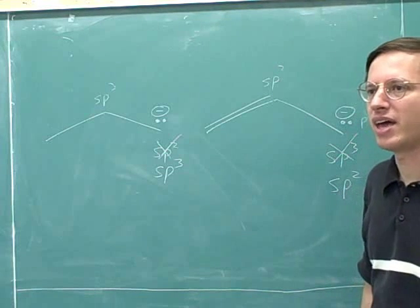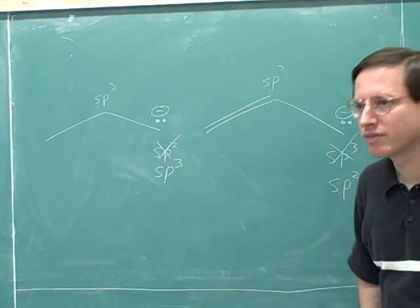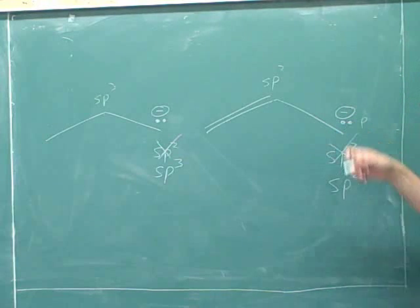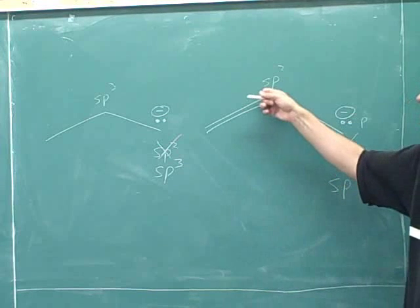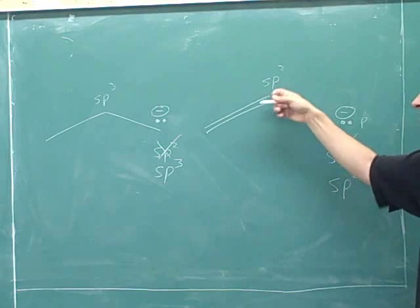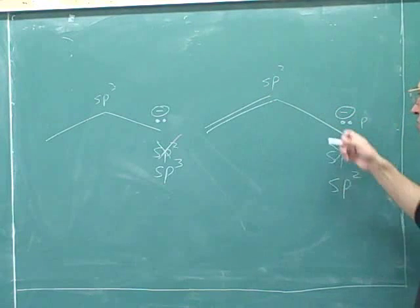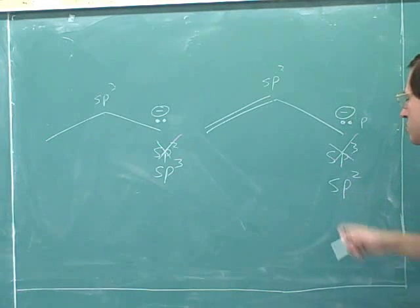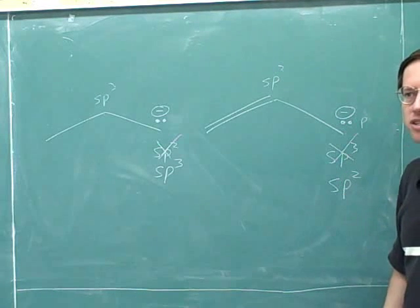All right, so now we can understand that exception that we were talking about. If you have a lone pair, and you're connected to an sp2 hybridized atom, then you have the potential to have side-to-side overlap of those p orbitals, as long as you also have a p orbital. So in that case, you're going to be sp2 to allow that conjugation or resonance.